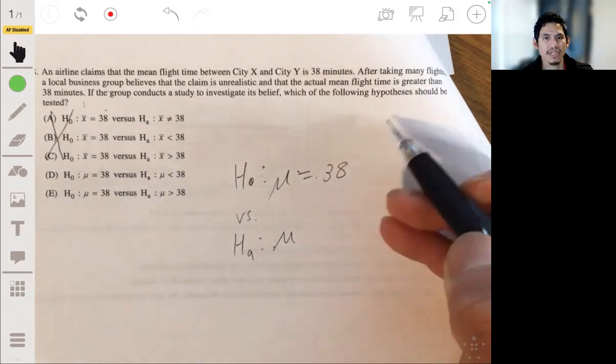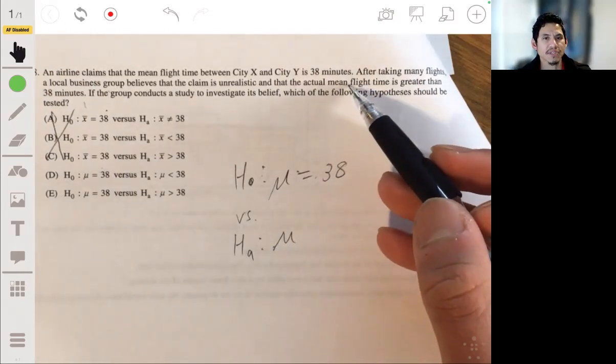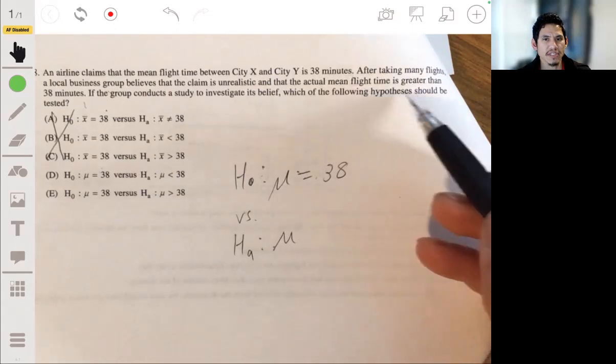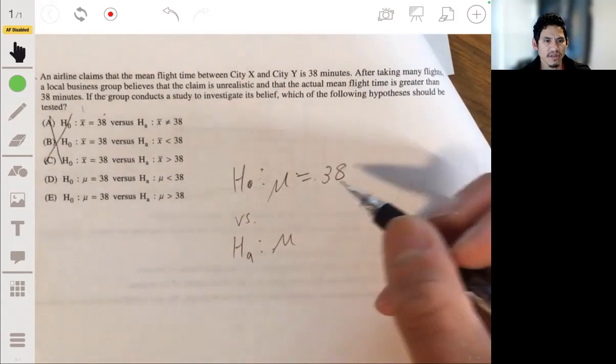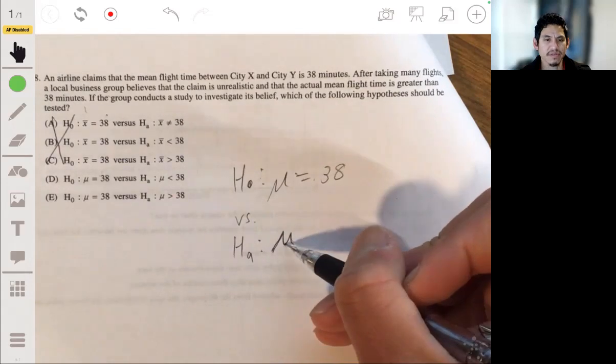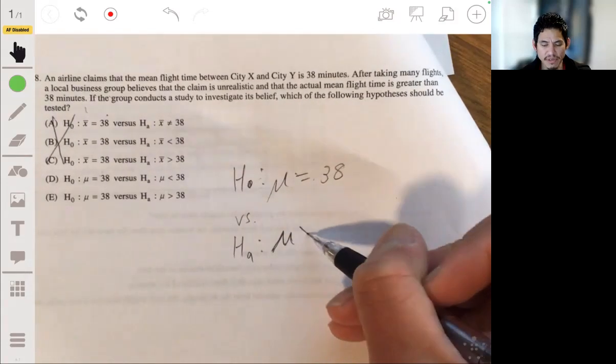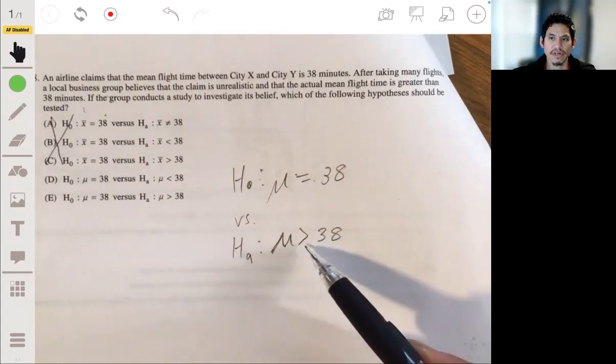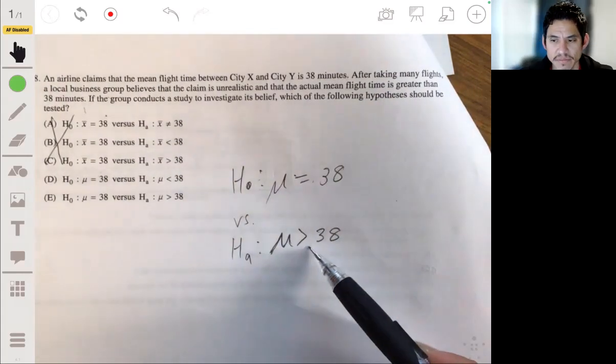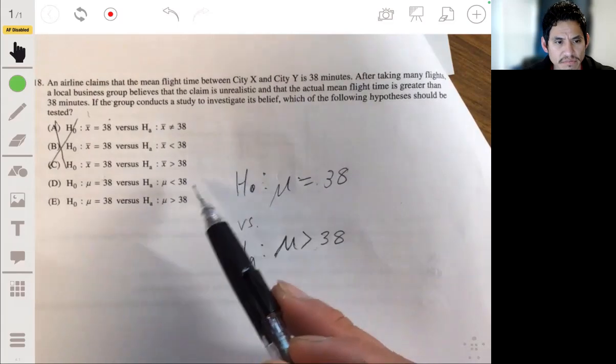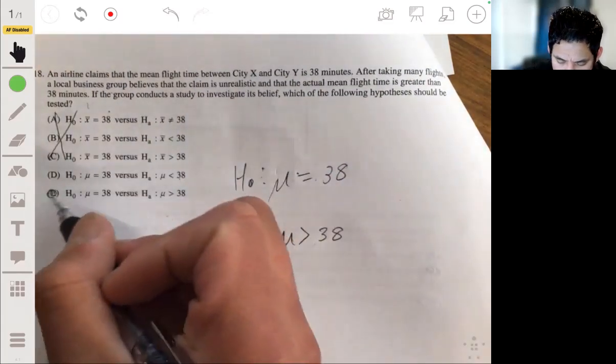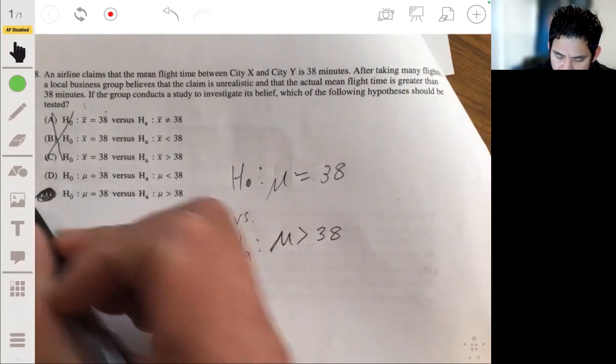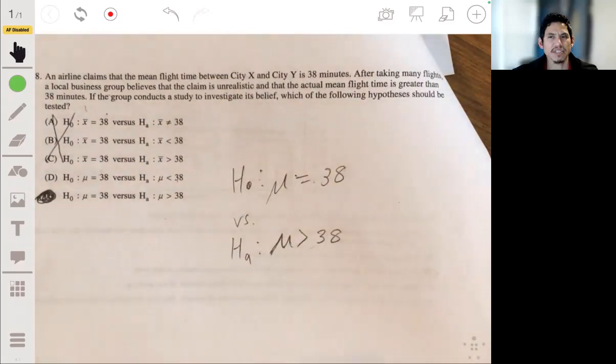They're saying the actual mean is greater than 38. So we're saying that the population mean, or mu, is going to be greater than 38. So making sure you know your inequality symbols, it's E. Yeah, that one's pretty clear and straightforward. You can really just test them if you know your symbols.